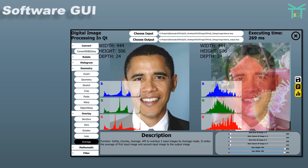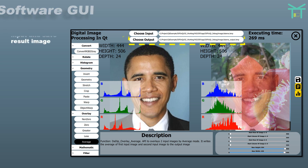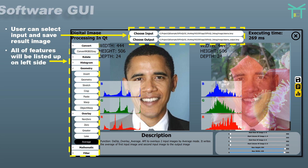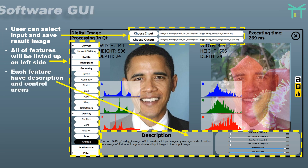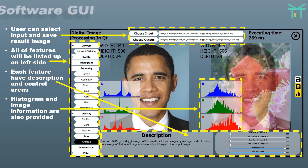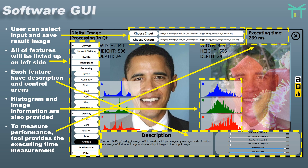For the software GUI, the user can select input and save result images. All features will be listed on the left side. Each feature has description and control areas. Histogram and image information are also provided. To measure performance, the tool provides an executing time measurement.